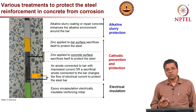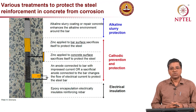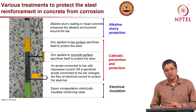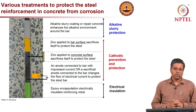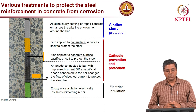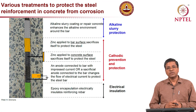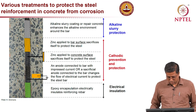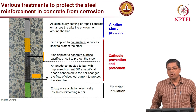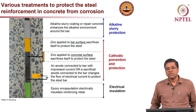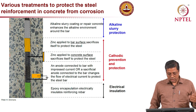When talking about cathodic protection technique: if we are protecting steel before it starts corroding, we call it cathodic prevention. If the same technique is applied to steel that has already started corroding, we call it cathodic protection. The third category is electrical insulation of the reinforcement, which was already covered in the module on coated reinforcement, specifically fusion bonded epoxy coated rebars.